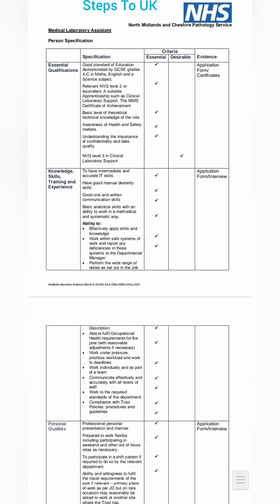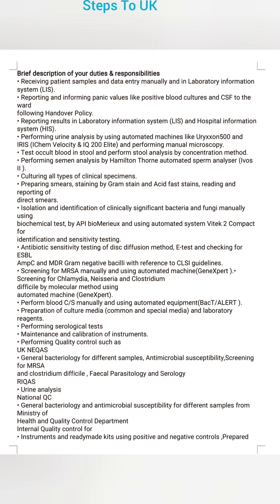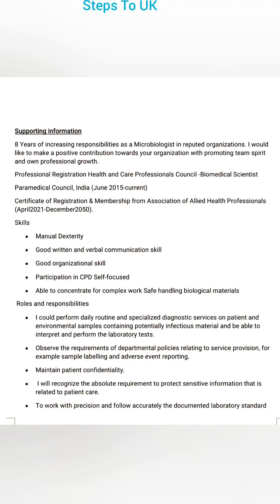You'll see a person specification in rows and columns — these are the essential and desirable criteria. Try to find keywords from these criteria. Interview questions will come from the essential and desirable criteria, so for each keyword, prepare a practical situation as an example. In my job history, I mentioned how I receive samples and which machines I know, including all relevant details. If you worked in a small hospital with fewer things to mention, keep it brief.